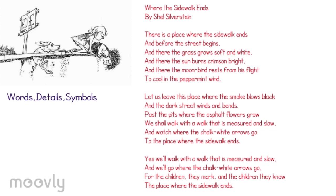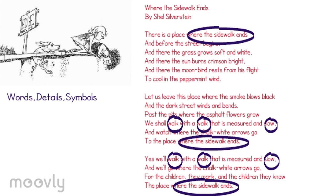In this poem, the words that repeat themselves are: walk, which repeats four times; slow, four times; where the sidewalk ends, three times; children, twice; place, three times; and chalk white, twice.